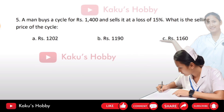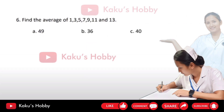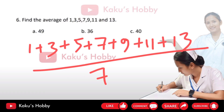Question number 6: find the average of 1, 3, 5, 7, 9, 11, and 13. We need to divide the sum by the count to find the average.